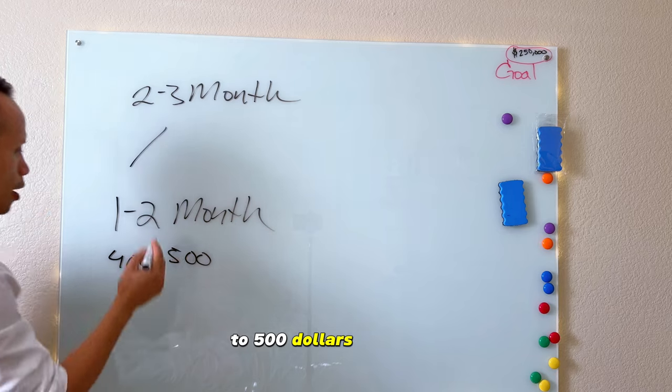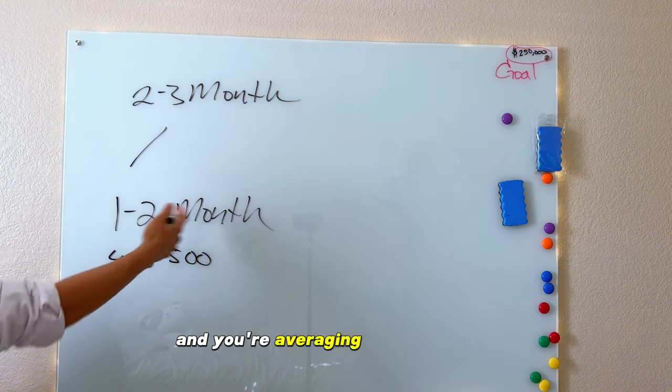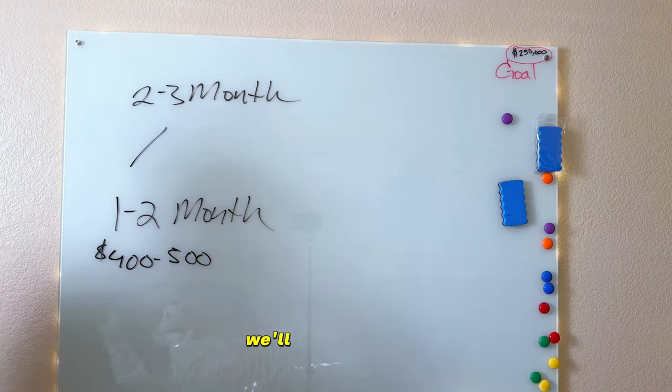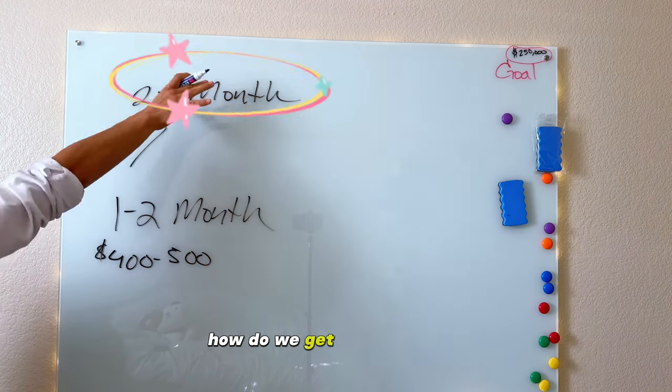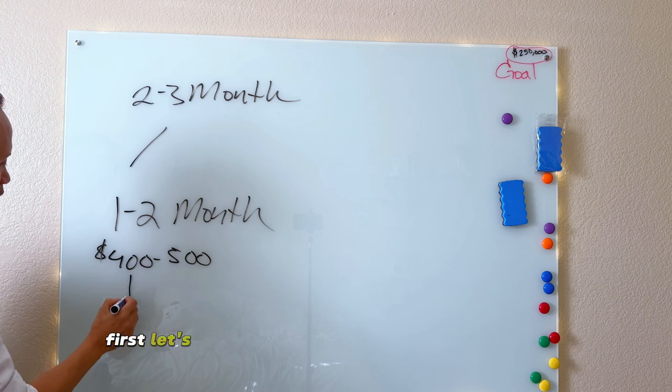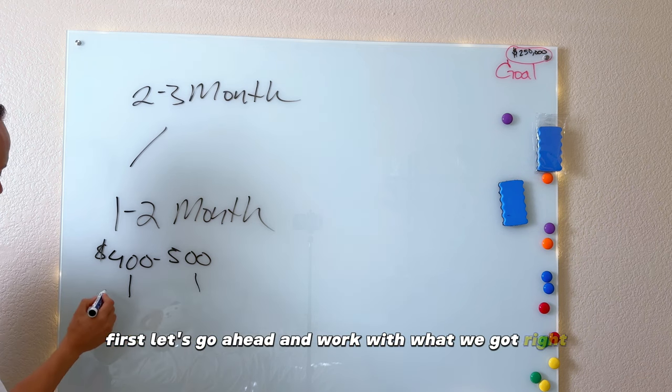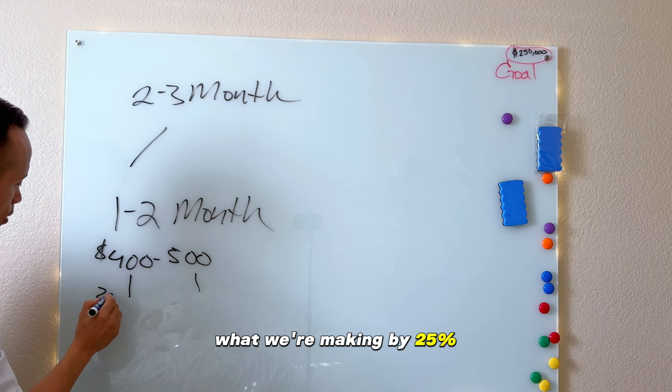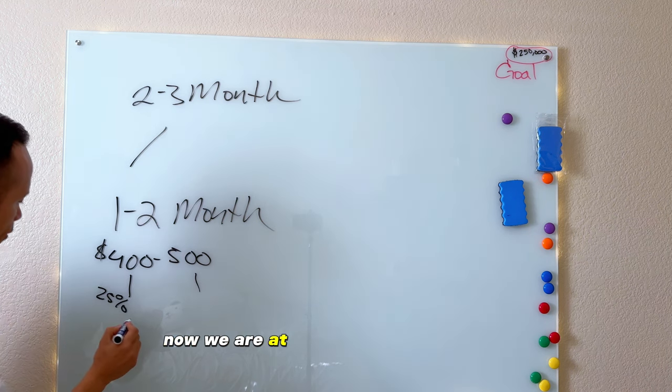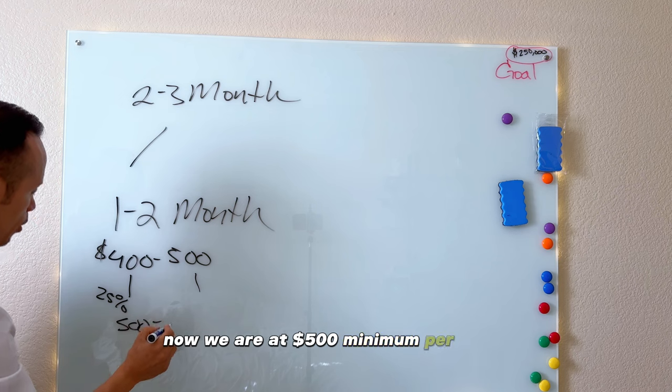If you're averaging anywhere from $400 to $500 per event and you're averaging one to two a month, we'll work with that. But before we jump into how do we get more events, first let's go ahead and work with what we got. Let's increase what we're making by 25%.